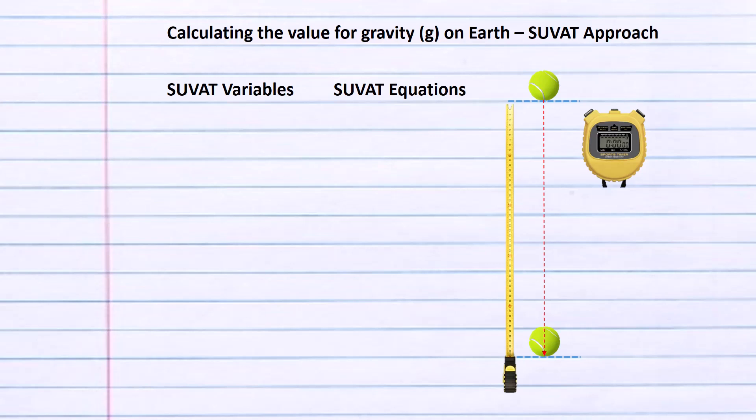Now let's look at this from a SUVAT perspective. The acceleration is what we're trying to solve. A is the symbol for acceleration. U is the initial velocity and we know that to be zero meters per second. T the time, we're going to use the average time of 0.64 seconds. The displacement in this scenario is two meters.